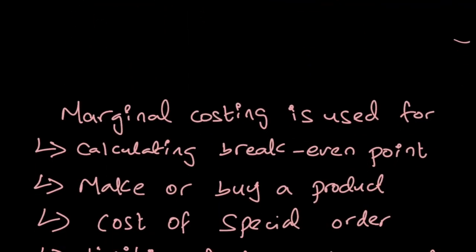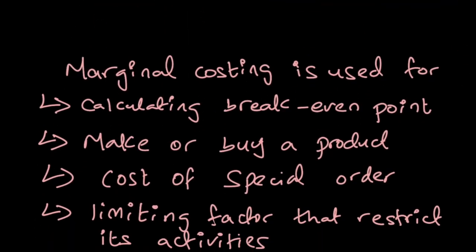Marginal costing is used for the following purposes: to calculate the break-even point; to decide whether to make or buy a product; to evaluate a special order where you can't sell at the normal selling price and must sell at a lower price; and to maximize profit when the firm has a limiting factor that restricts business activities. We'll use marginal costing in all of these scenarios, but first let's discuss variable cost and fixed cost in detail.